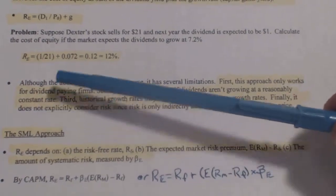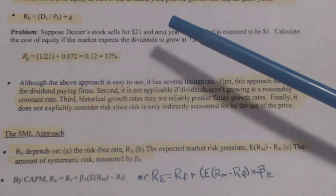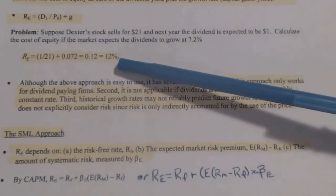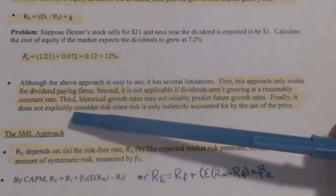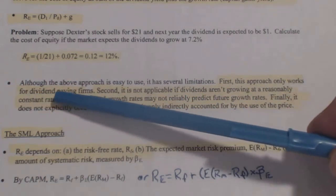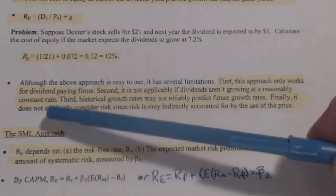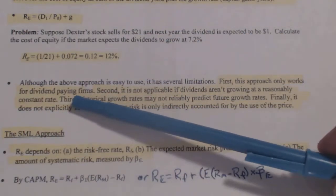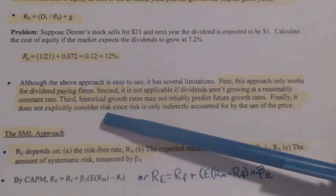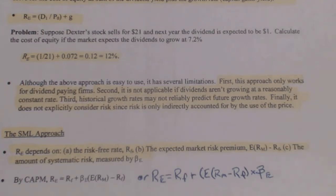There are pluses and minuses to that approach. One is you've got to have a dividend — if you don't have a dividend, you can't price it with this model. If there's no growth rate, you can do it as a perpetuity, which is the dividend divided by the price. But you need a dividend; if you don't have one, you'll have to use the SML approach. Although the approach is easy to use, it has several limitations: first, it only works for a dividend-paying firm; second, it's not applicable if dividends aren't growing at a reasonably constant rate; third, historic growth rates may not reliably predict future dividend growth rates; and finally, it does not explicitly consider risk, since risk is only indirectly accounted for by the use of the price.